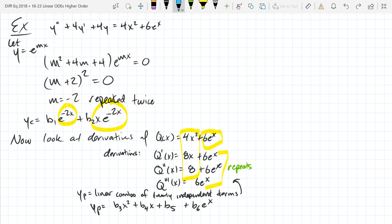What are some ideas? How in the world are we going to figure out what B3, 4, 5, and 6 are? So, what can I do with YP and my original differential equation? If it's a solution, I can plug it in. So, what we're going to do is we're going to plug in YP. So, I need to find YP prime and YP double prime and then plug it in.